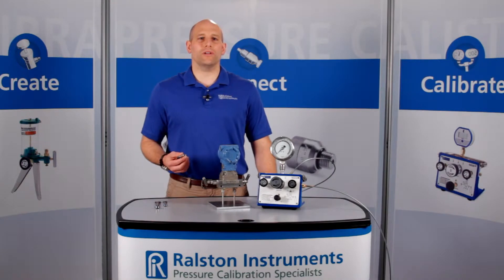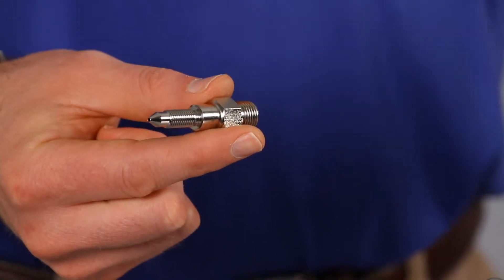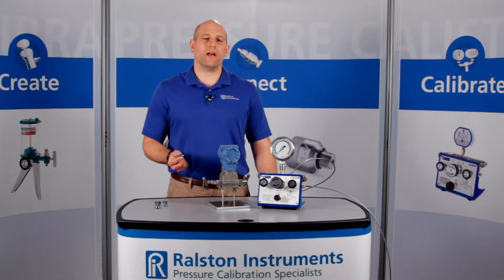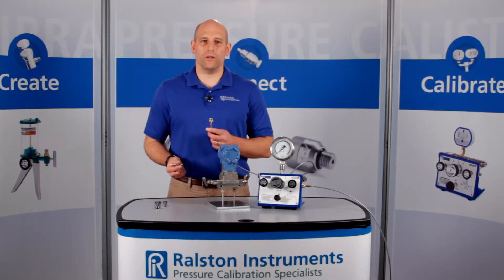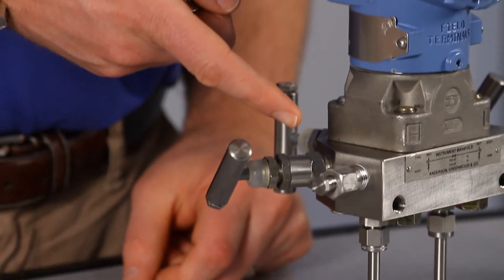I'm going to show you one of our Ralston quick test adapters. This is the DP transmitter Ralston quick test adapter. This allows you to connect a quick test hose directly to a differential pressure transmitter without removing the vent plug.